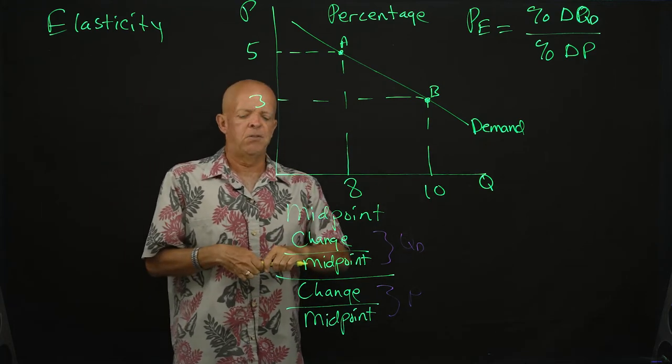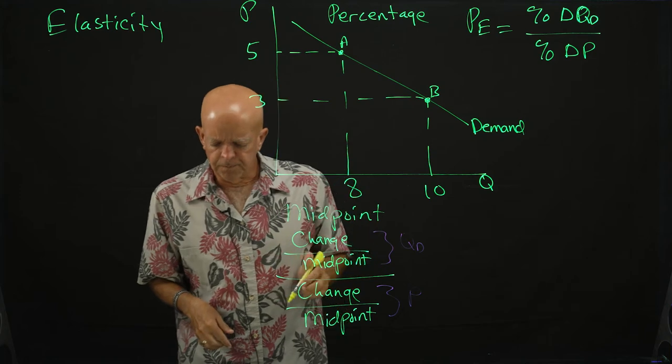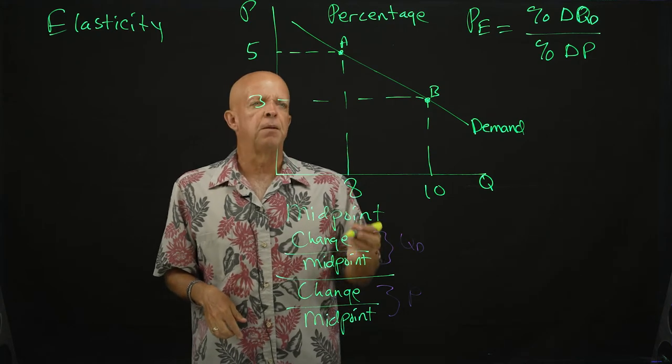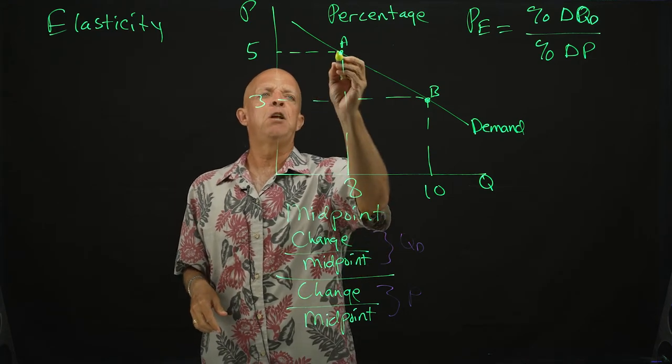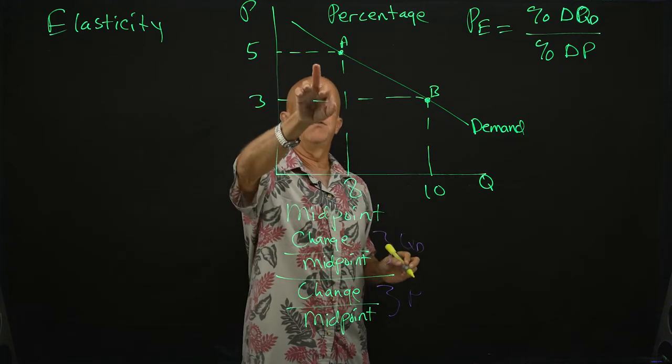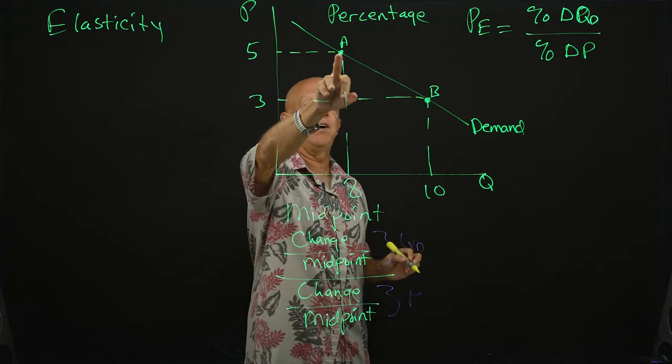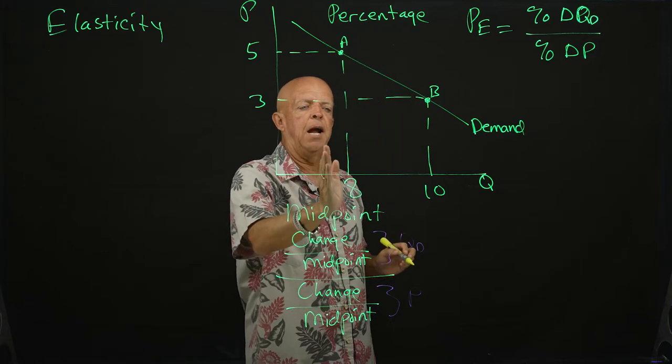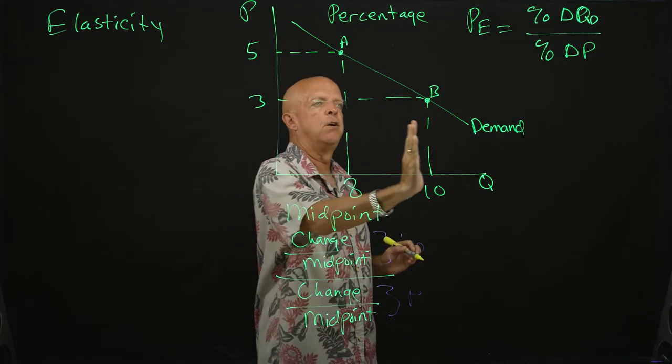So let's say that we are doing a change from A to B, and that would be going from a price - prices dropped from five dollars to three dollars, and the quantity goes from eight to ten.